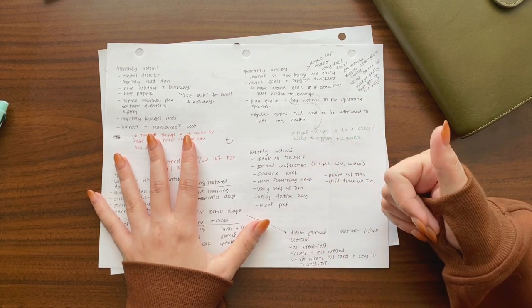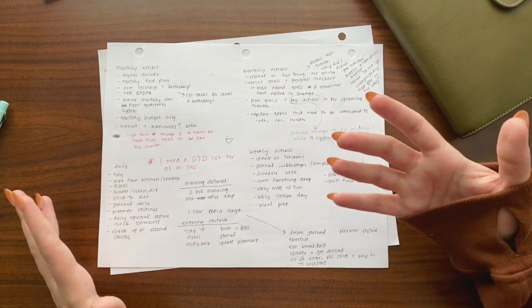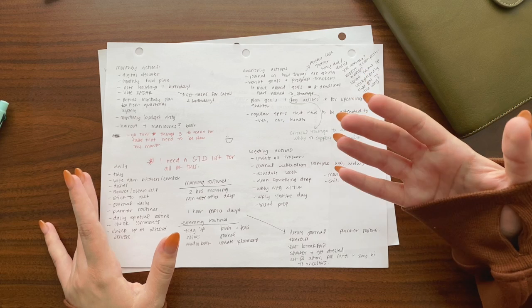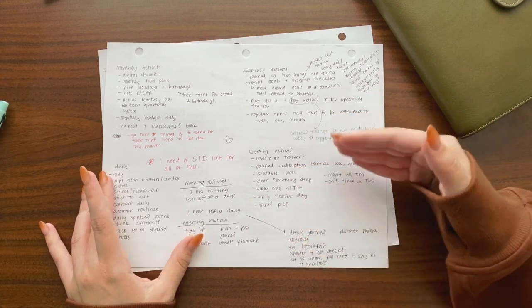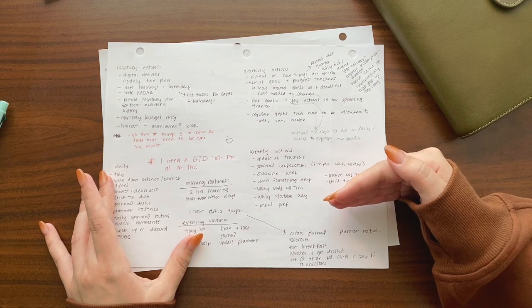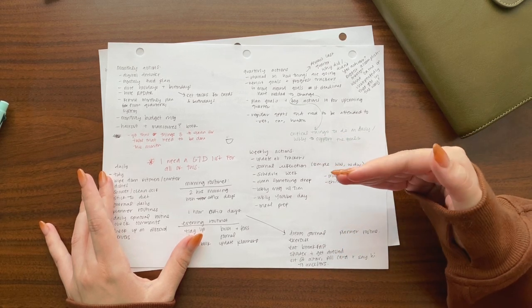So I highly recommend you make a list of everything that you're already doing on a regular basis that helps you just function. Cleaning your apartment, taking your kids to school, taking a nap every day. What do you do that you must do in order to survive and take care of your basic needs? And then once you do that, you'll have a more realistic understanding of how much extra time you have.